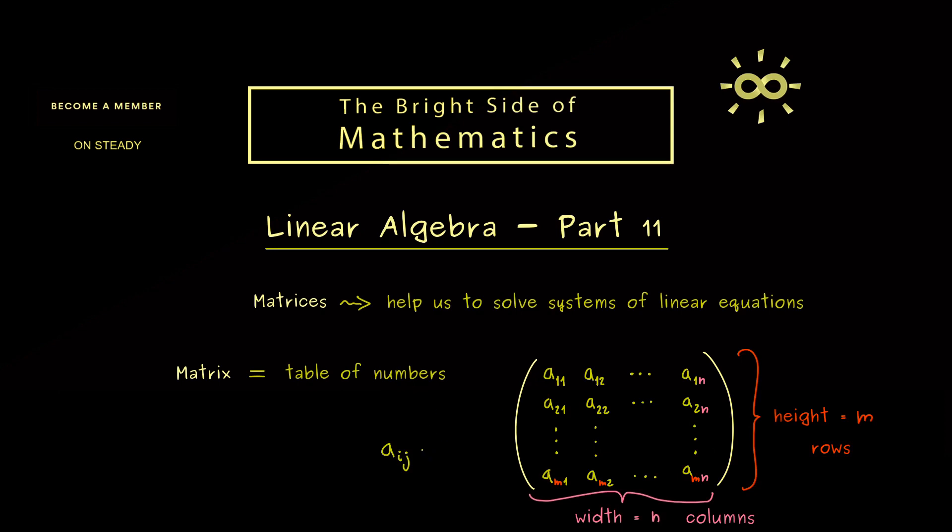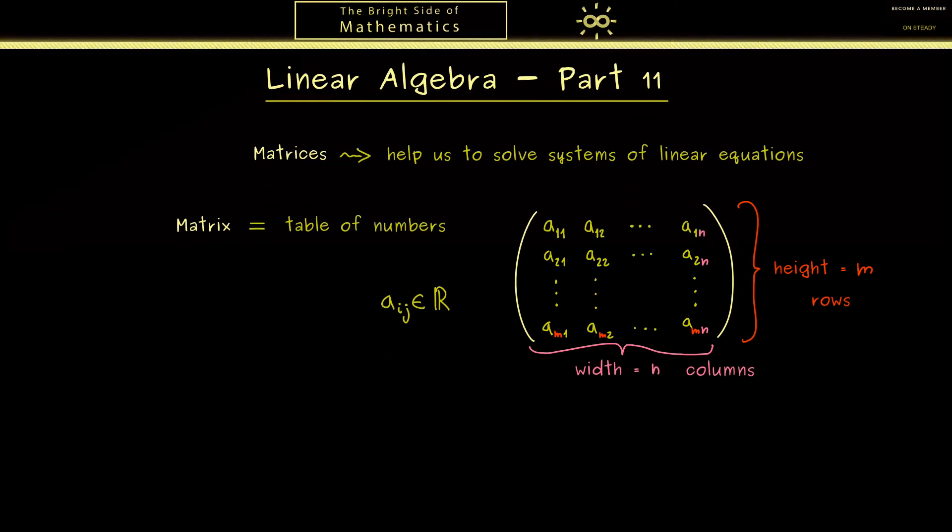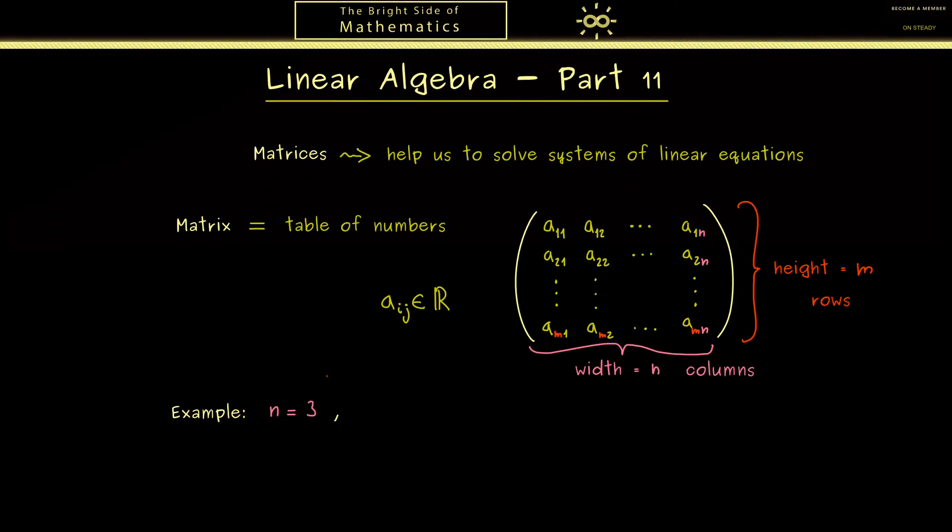Here the only assumption we put in for now is that all the entries in the matrix are real numbers. So without any problems we can immediately write down an example. So maybe we keep it simple: n should be equal to 3 and m should be equal to 2. Therefore now we have 6 numbers, and maybe we start with 4 and 6, and maybe we put in π as well, and maybe the square root of 2, and 1 and 0. Okay, so you see this is one easy example, but now we want to look at the set of all possible matrices.